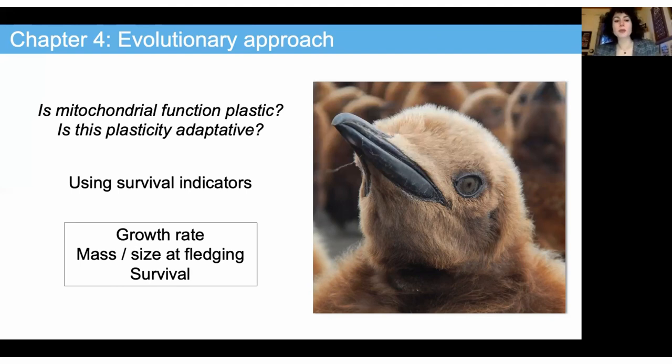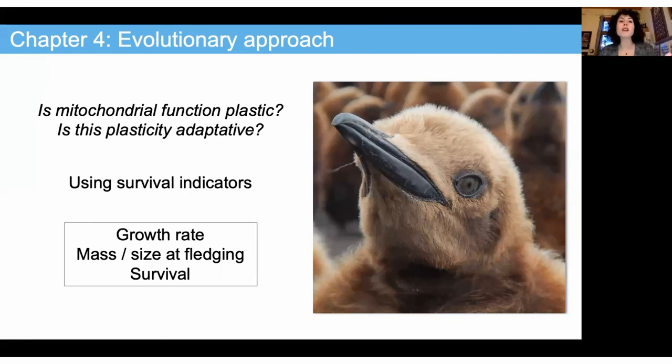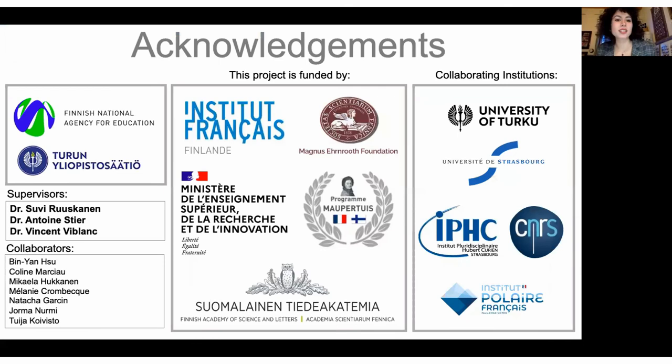At the end, we expect to better understand how variation in energy production may impact the survival of the bird. Is this variation adaptive? Could it bring something to the bird, for example increase survival? We use survival indicators such as growth rate, mass or size at fledging, because we know that mass at fledging impacts long-term survival. We also check whether birds survive longer if they have better mitochondrial efficiency and better capacity to produce energy.